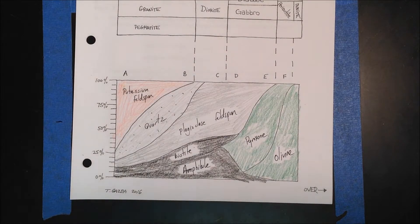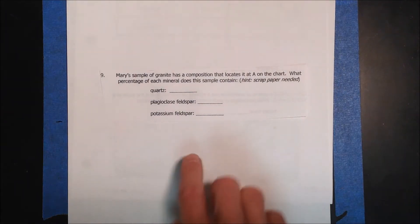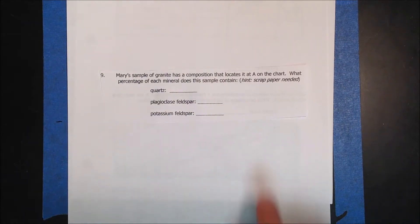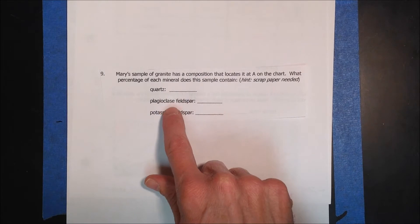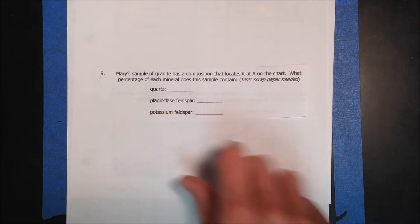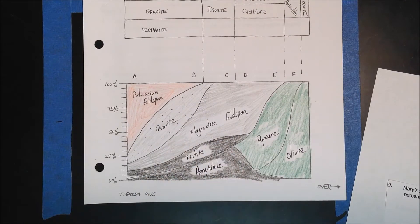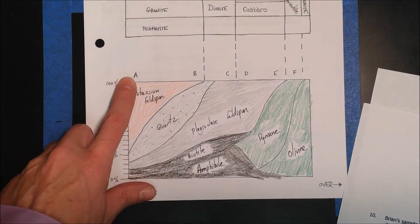This video is going to show how to find the mineral percentage of igneous rocks. This first question states that a married sample of granite has a composition that puts it at A on the chart, and we need to find the percentages of quartz, plagioclase, and potassium feldspar.